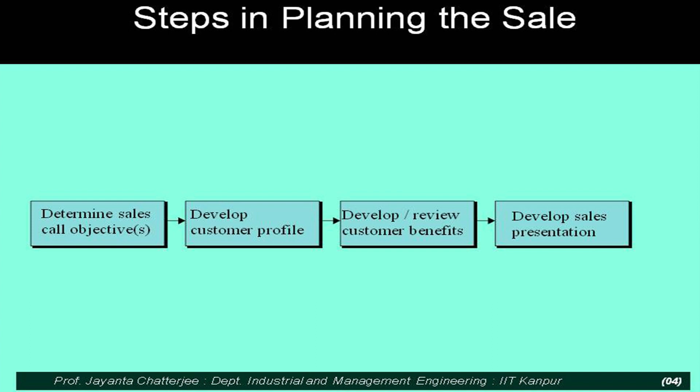Every call that you make — after the prospect database has given you an input and your sales dashboard says this is the customer to call on today — be clear about your sales objective. What is it that you want to achieve in this particular call? Every call must have very crisply defined one, two or three objectives — not a broad objective like 'I want to book the order,' but specifically what objections and problems you are going to address in the interaction.